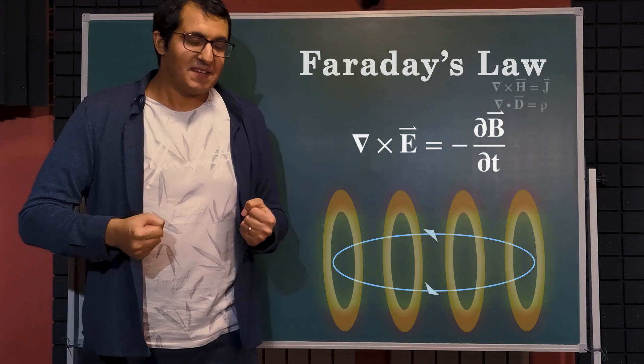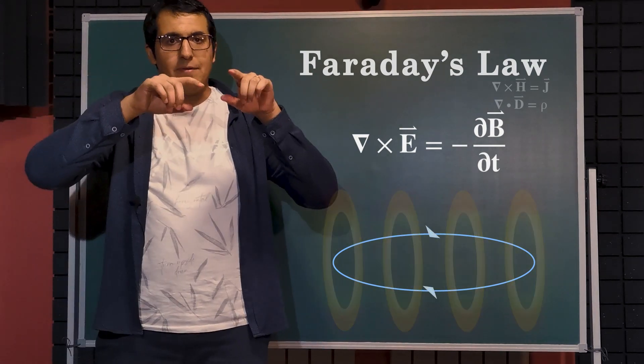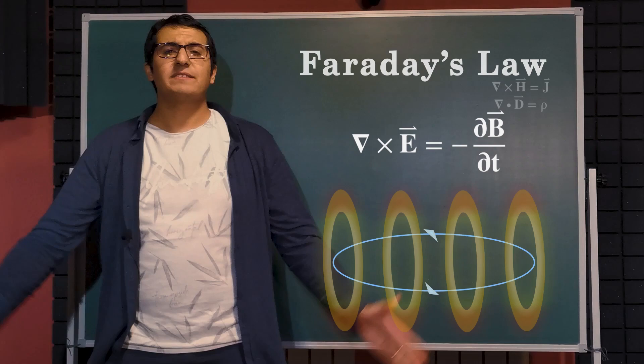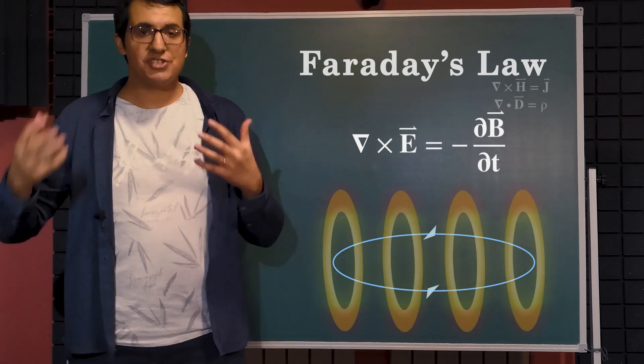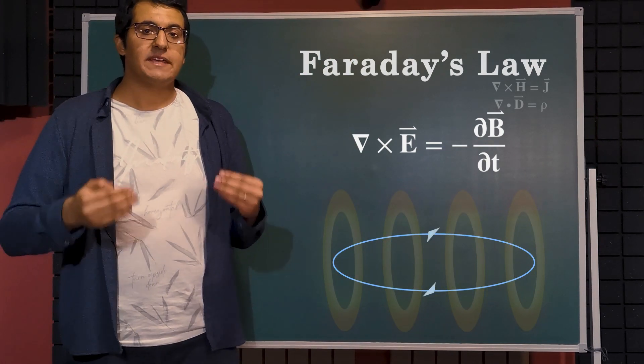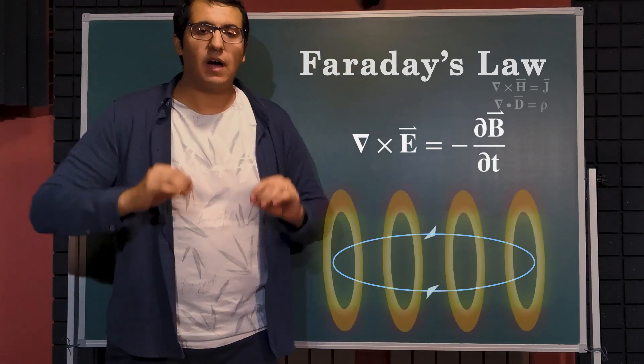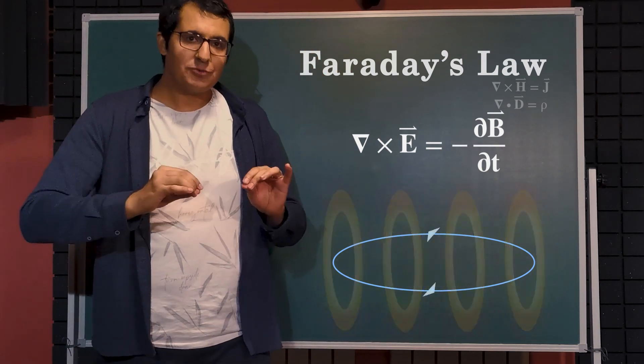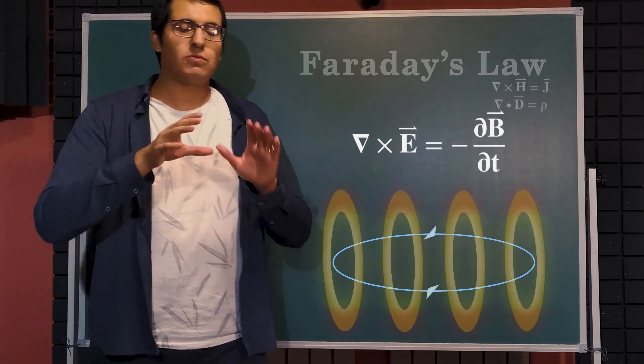In other words, that means if you have a loop of wire and there is a magnetic field around it which is moving or changing rapidly, that will induce a current on the wire or that will induce a non-zero voltage over the wire.